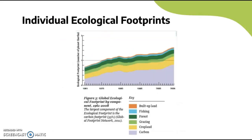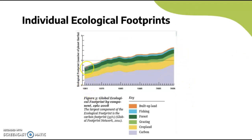Looking at the ecological footprint by component: the largest is carbon, followed by cropland, then forest, then grazing, then fishing, and finally built-up land. Overall, all of these components have increased from 1961 to 2008, indicating a general upward trend in the global ecological footprint across all industries.